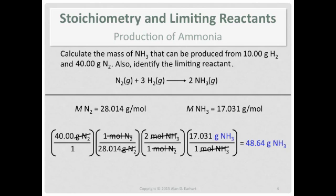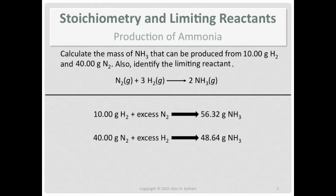So 10 grams of hydrogen gas and an excess of nitrogen gas will allow us to produce 56.32 grams of ammonia. 40.00 grams of nitrogen gas plus an excess of hydrogen gas would allow us to produce 48.64 grams of ammonia. But take a look at the bottom one. As soon as we have made, and as the reaction continues, 48.64 grams of ammonia, we've exhausted the nitrogen. We can't make 56.32 grams of ammonia because we don't have enough nitrogen gas.